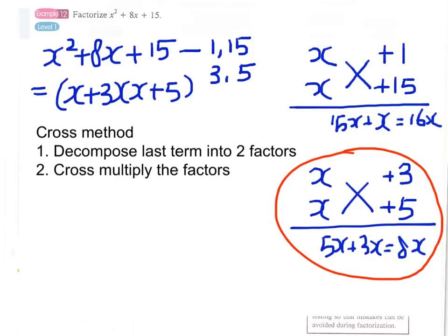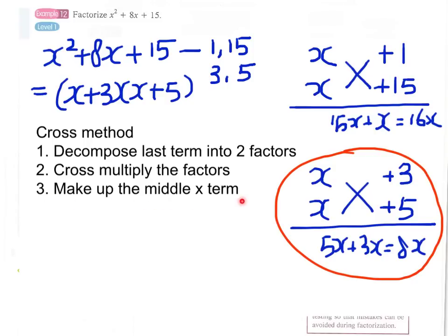We can now summarize the Cross method — it is composed of only two steps, and these two steps must be completed in exact order. Step 1: decompose the last term — always the constant term — into two factors. Step 2: perform the cross multiplication of the two factors to make up the middle x term.